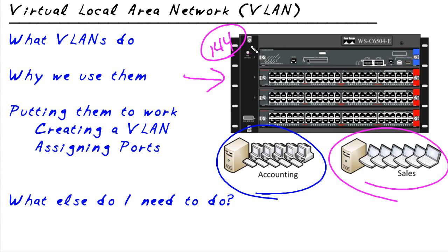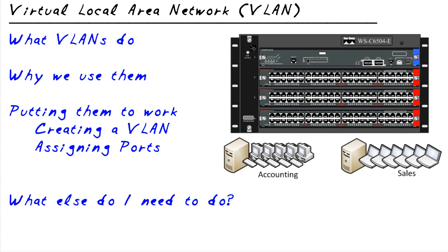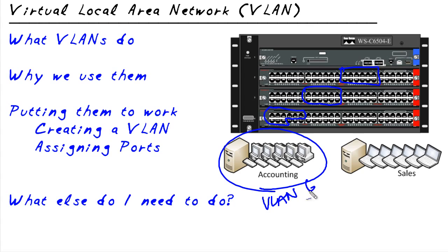They'd be on the same local area network. How do we separate them? The answer is virtual local area networks. The way we can make it virtual is this: we can take the accounting folks and take just these ports right here — they don't even have to be in order. We can take some of those ports, and maybe these ports, and maybe a few of those ports, and assign them all to a specific VLAN. Let's say VLAN 6, just because we can. It's just a number. And all those ports — anybody connected into those ports — are going to be like they're on the same local area network.